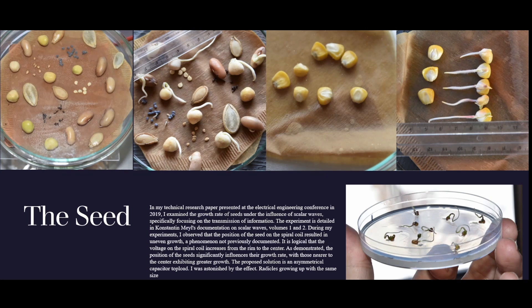During my experiments, I observed that the position of the seed on the spiral coil resulted in uneven growth, a phenomenon not previously documented. It is logical that the voltage on the spiral coil increases from the rim to the center.